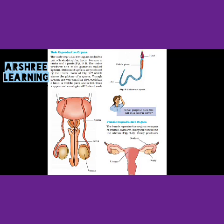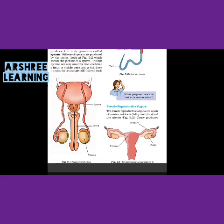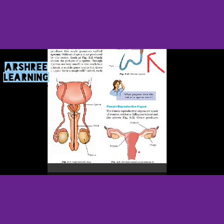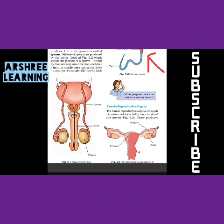If you see the picture of the sperm, it looks like an earthworm which has a head-like structure. You can see that it has three parts: the head, the middle part, and the tail. You have to remember that the male reproductive organ produces a sperm which looks like an earthworm.